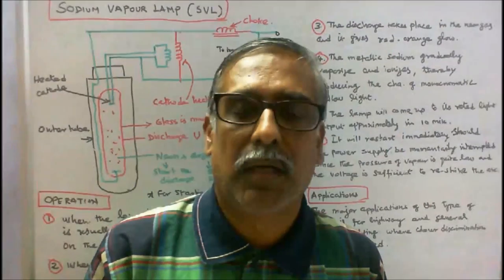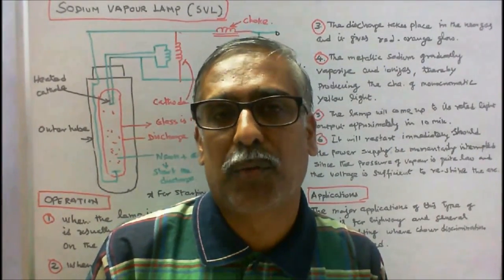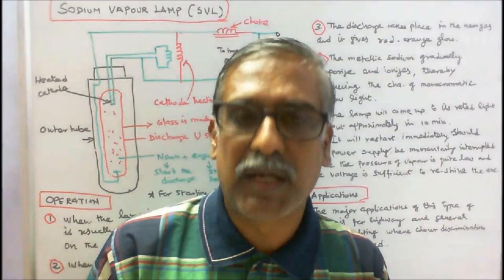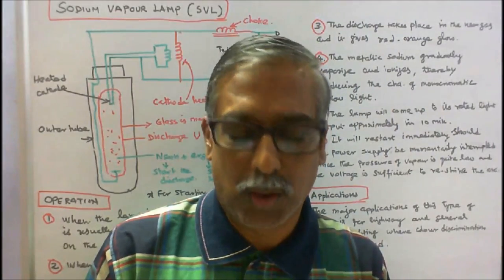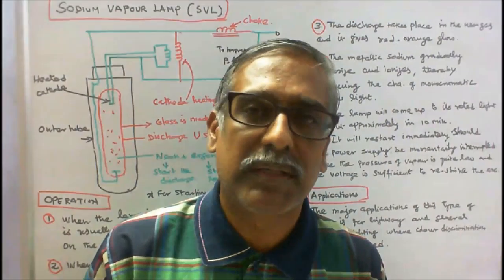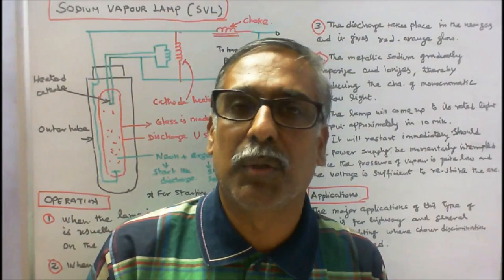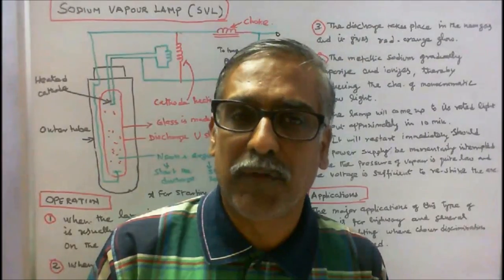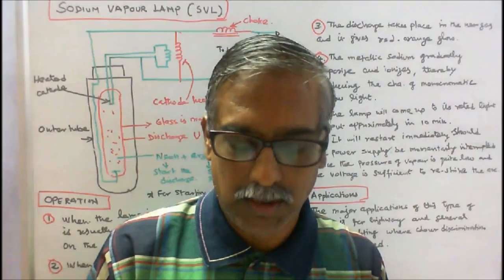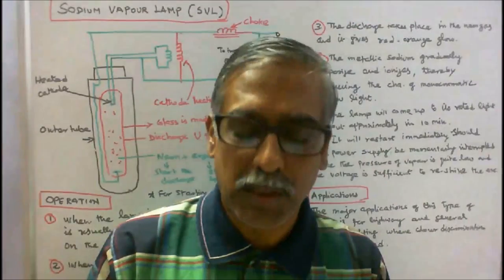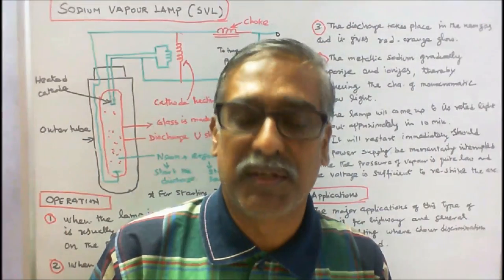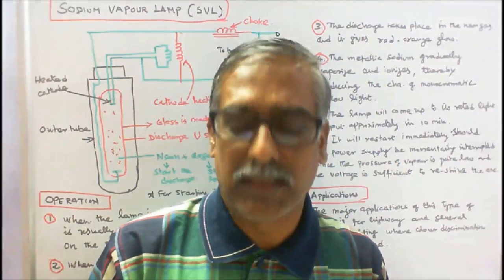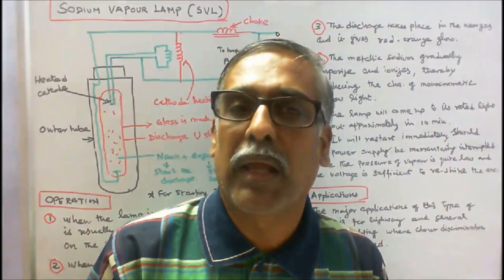Advantages of low pressure sodium vapor lamp: Number one, its lamp efficacy is 100 to 185 lumens per watt. Number two, its average life is 14,000 to 18,000 hours. Number three, it provides uniform light distribution. Number four, lumen output does not drop with age. Number five, high lamp efficacy leads to low energy consumption.